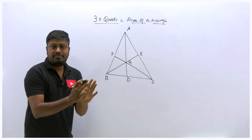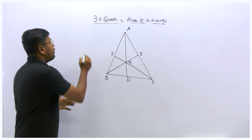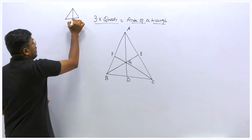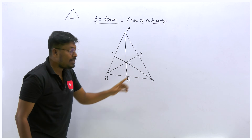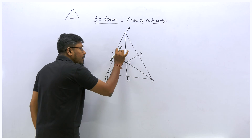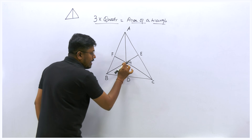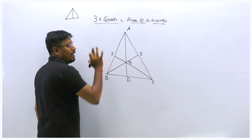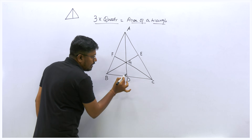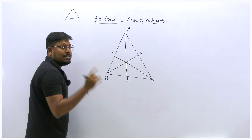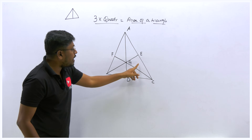Now just listen carefully. A median splits the triangle into two equal halves. When we draw three medians, all the parts are divided into equal areas. So each area after drawing three medians will be equal. All six part-areas will always be equal because the three medians split the triangle into equal areas.